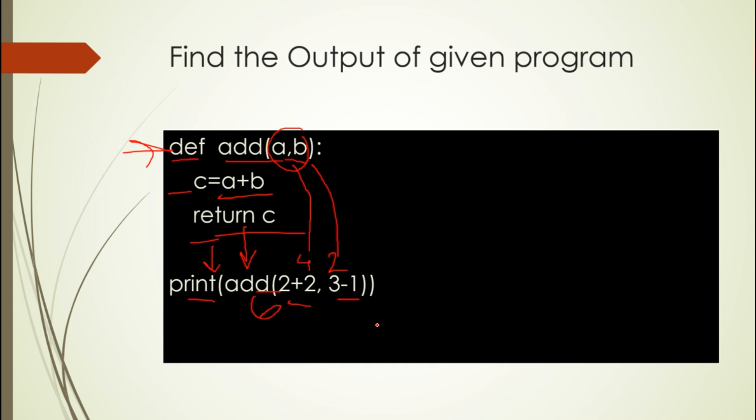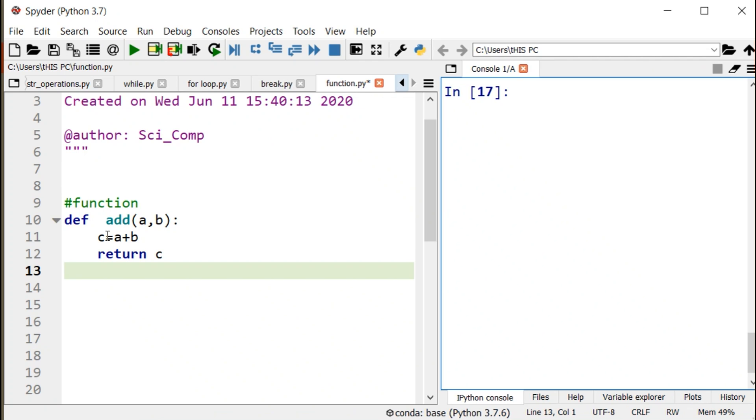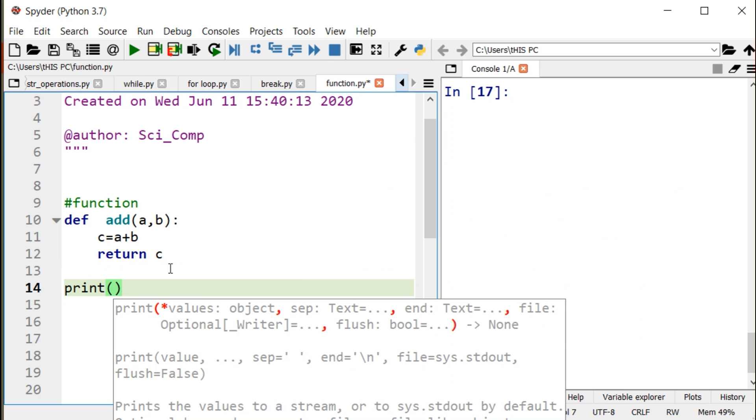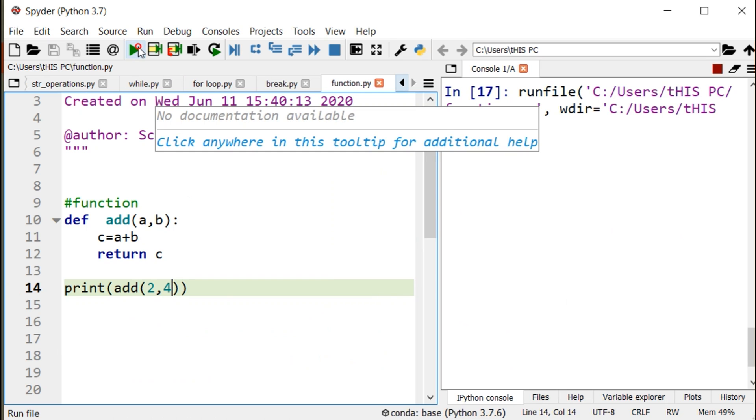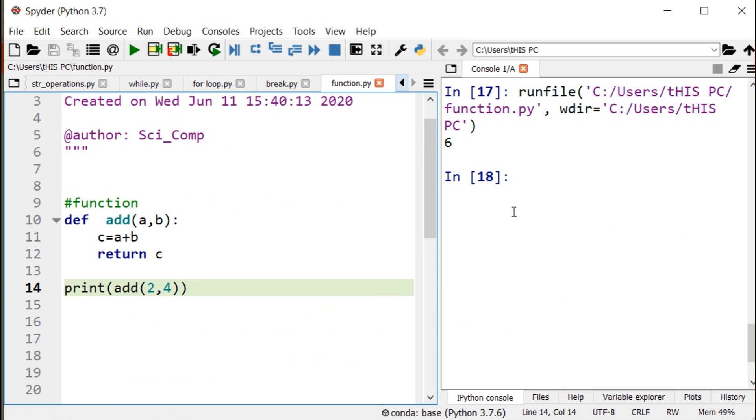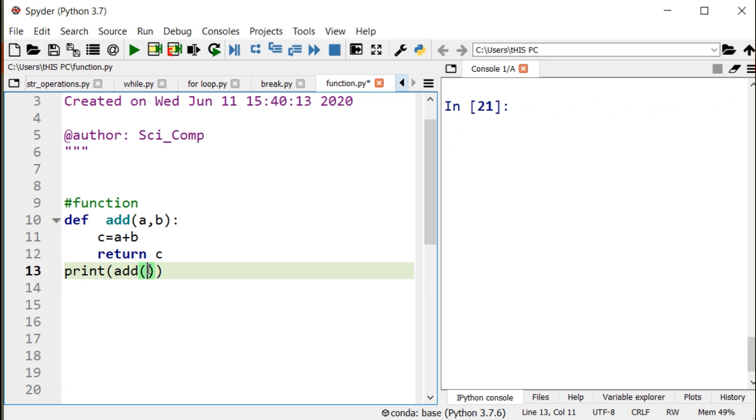Now we will do the coding. We can use formal and actual arguments like this. Let's start. This is the function definition. If you want to print, we call the add function and provide the first value 2 and second value 4. I run it, and the answer is 6. You can see the answer is 6.